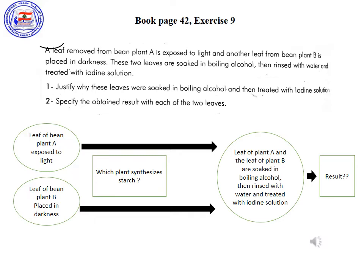Number 1: Justify why these leaves were soaked in boiling alcohol and then treated with iodine solution. The leaves were soaked in boiling alcohol to discolor them, or to remove the green pigments, and then treated with iodine solution to detect the presence or absence of starch.